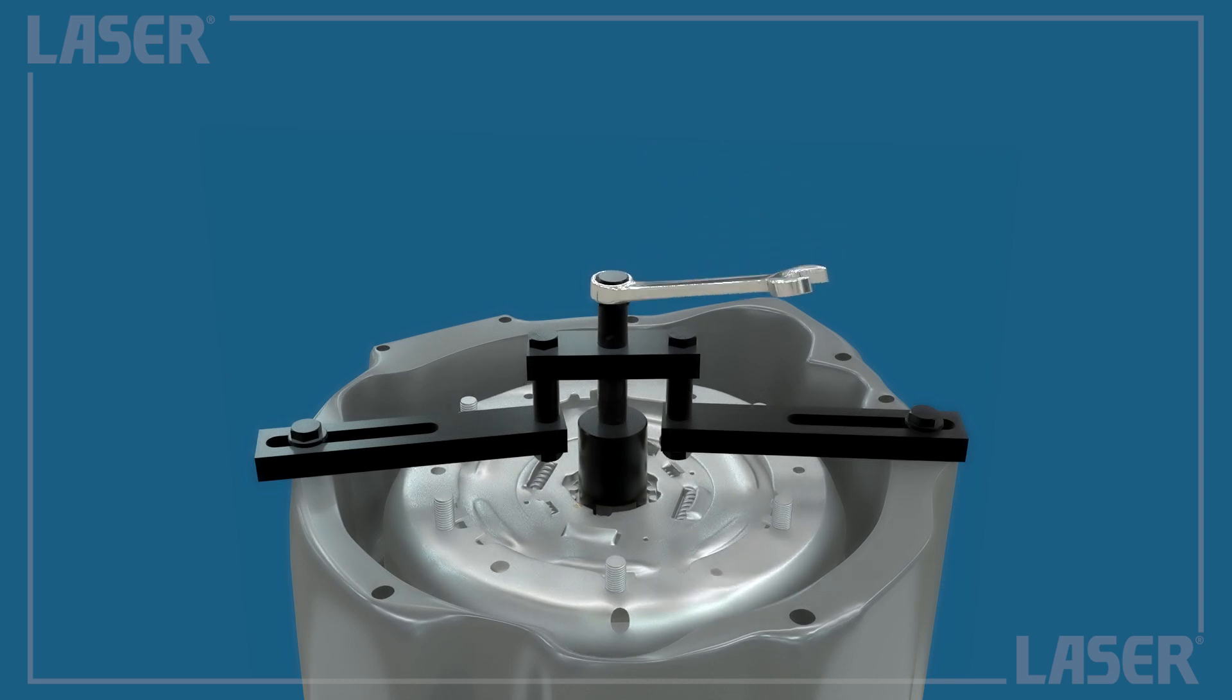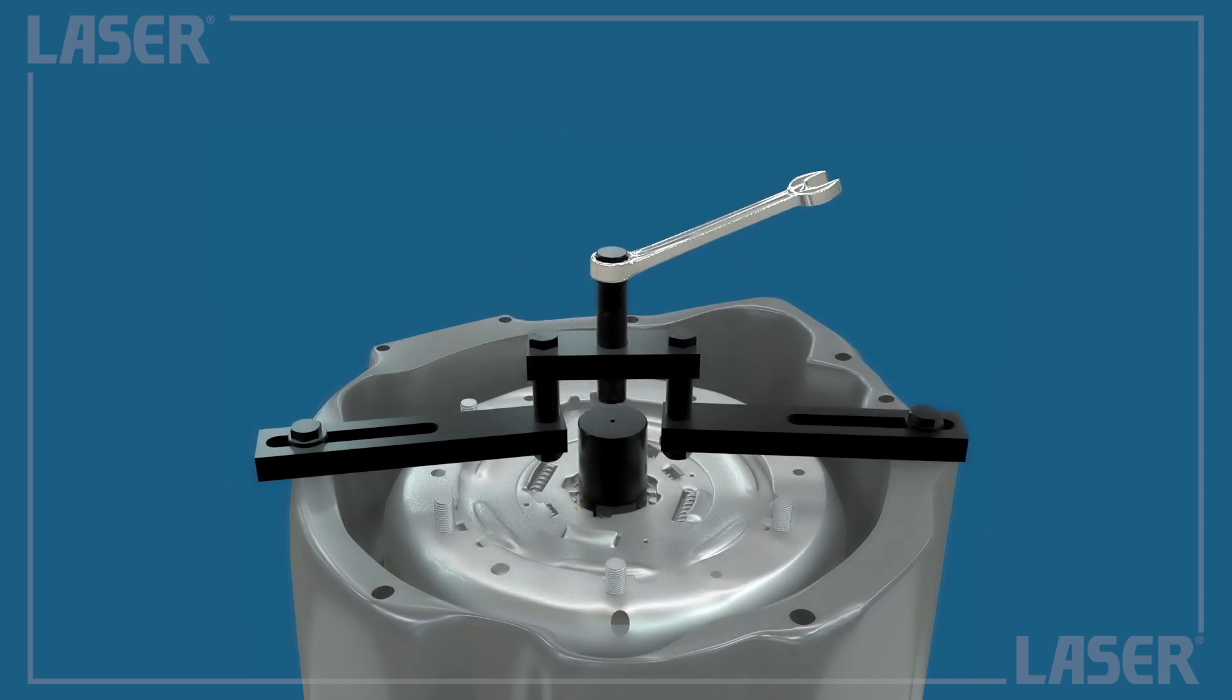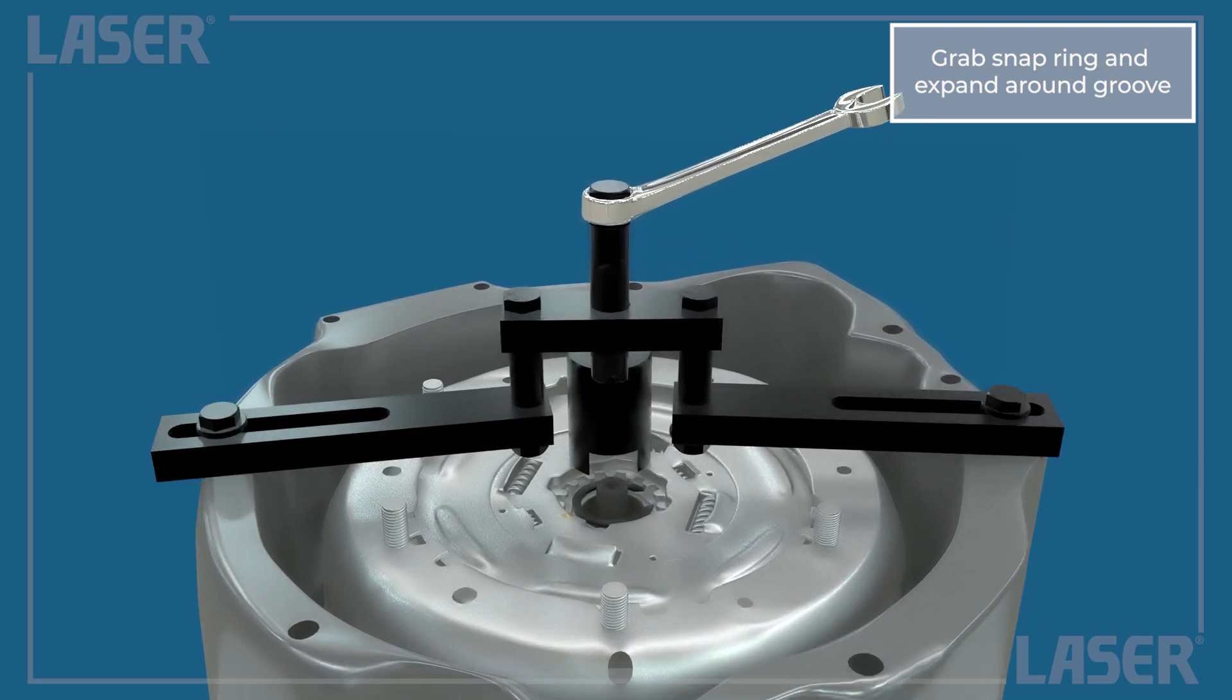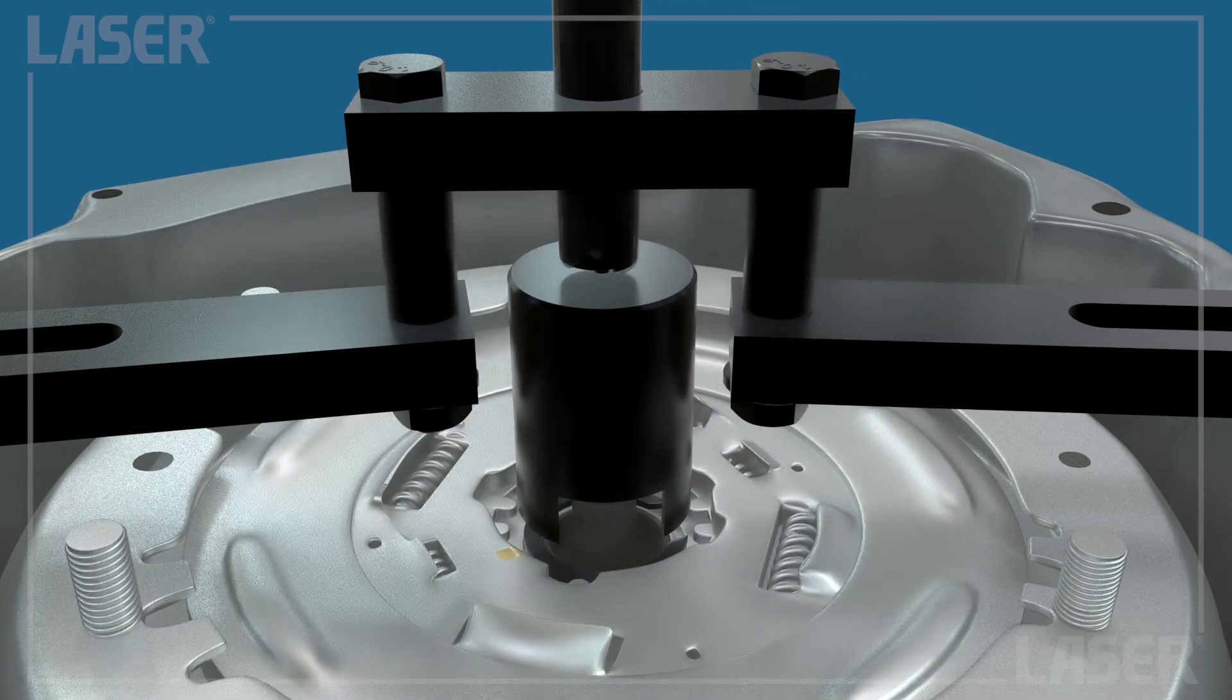Now screw down the clutch assembly until the top of the snap ring groove is visible. Back off the force screw, expand the snap ring and fit it over the outer shaft. Screw down to push the snap ring into place.